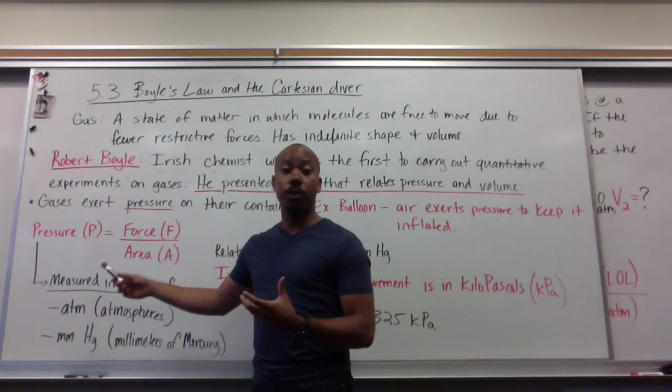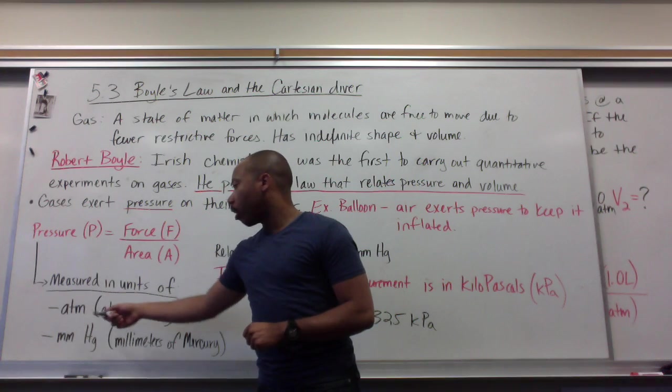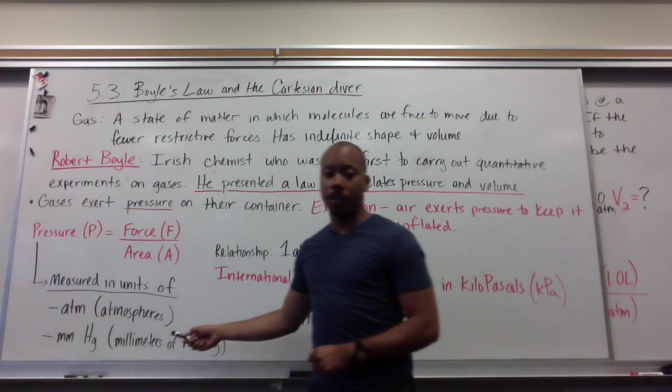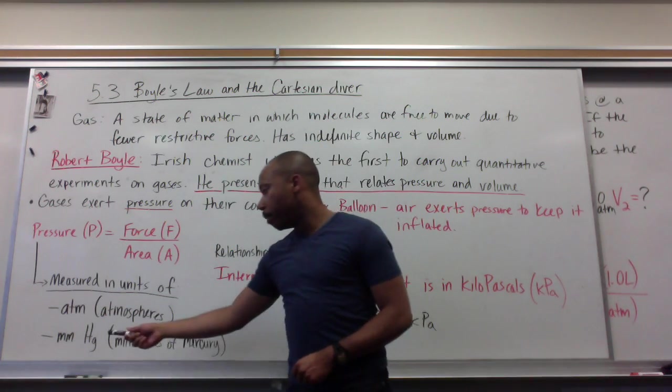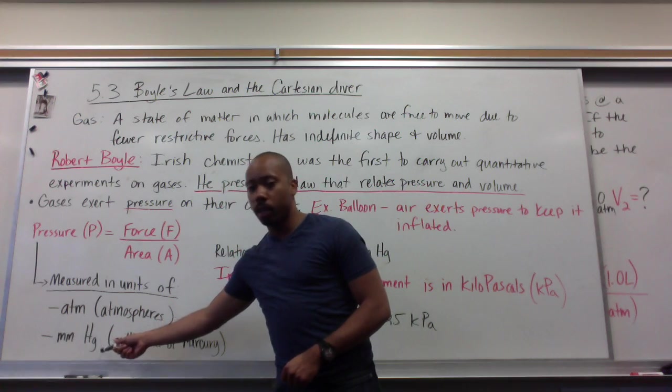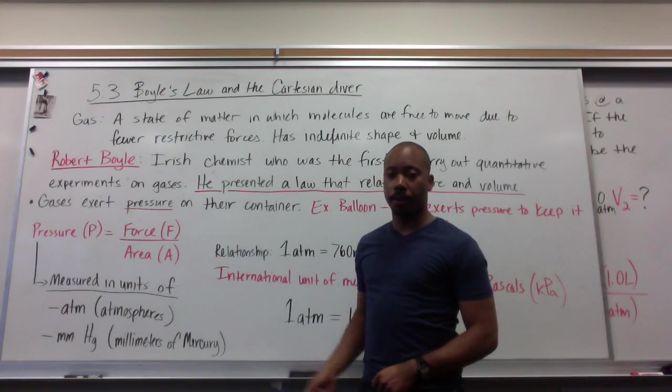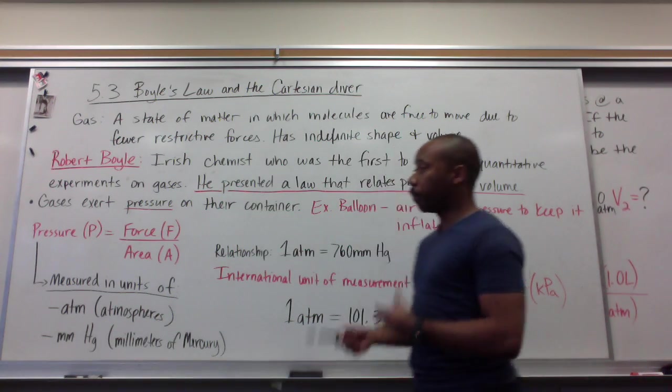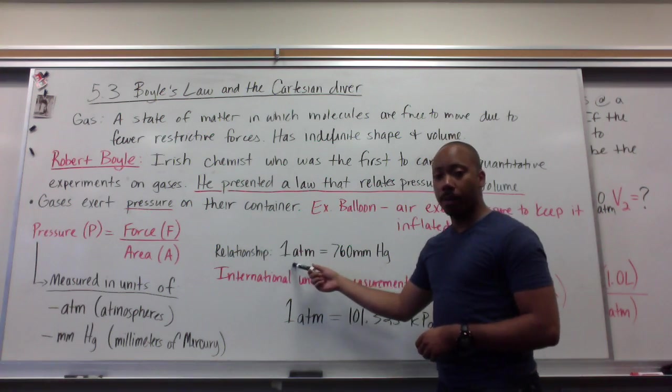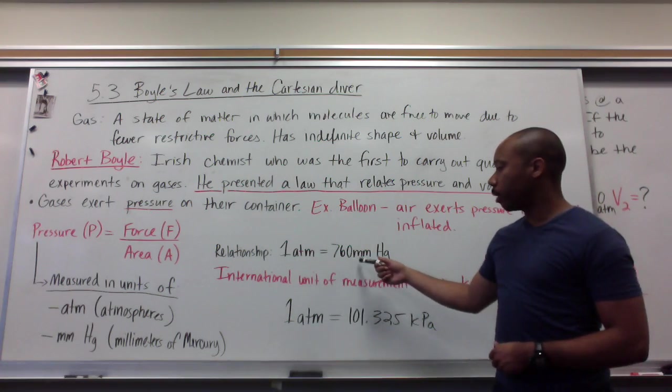Pressure is measured in a few units. Some common units are atmospheres (atm) and millimeters of mercury (mmHg). The relationship between these two is that one atmosphere is equal to 760 millimeters of mercury.